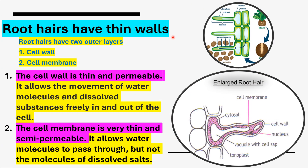Root hairs have thin walls. Root hairs have two outer layers: the cell wall and the cell membrane. The cell wall is made up of cellulose. In root hairs, the cell wall is thin and permeable. Permeable means it allows the movement of water molecules and dissolved substances freely in and out of the cell.